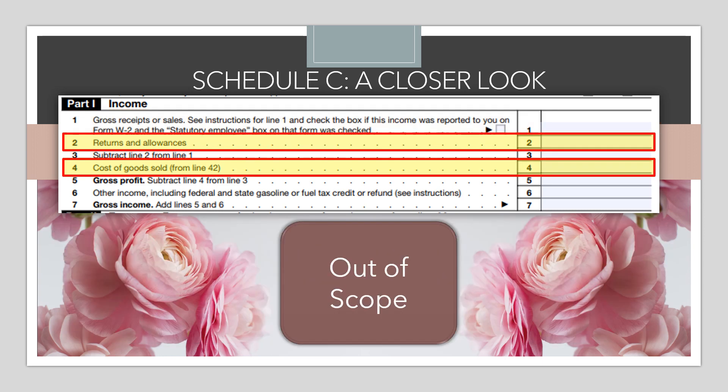Aside from gross receipts and calculation lines, a couple of other lines in the income section are for returns and allowances and cost of goods sold, which relates to inventory. Both of those situations are out of scope. Hopefully you've talked to your taxpayer before entering things into the return to find out if they have returns and allowances or inventory — if so, they would need to see a paid preparer for the current year.